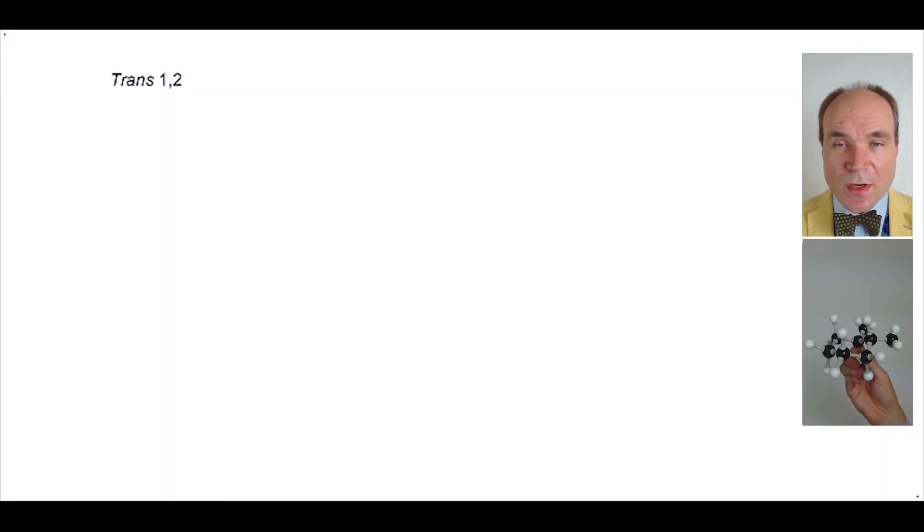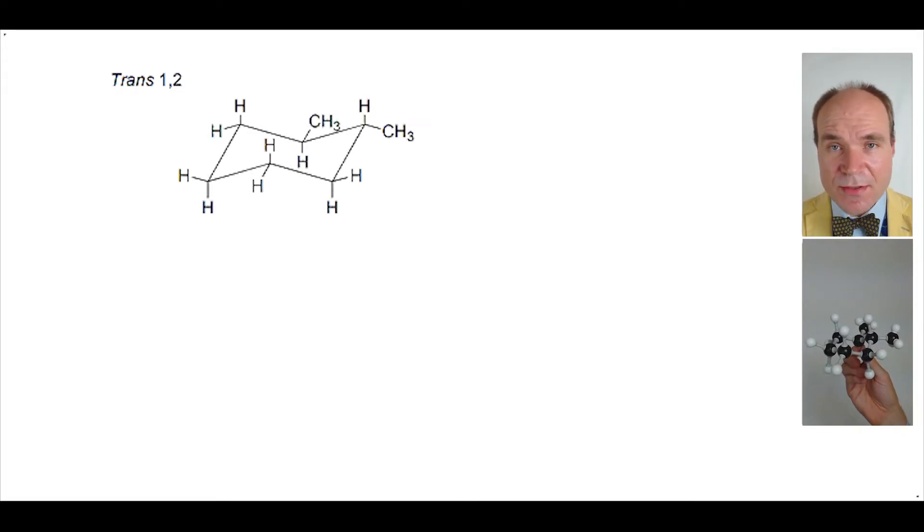Let's look at the trans-1,2-di-substitution pattern. 1,2 tells us that the methyl groups are attached to carbons 1 and 2 of the cyclohexane ring. Trans informs us that the methyl groups are on opposite sides of the ring. That's to say, if we drew a horizontal dotted line through one of the carbons in the ring, one of the methyl groups would be above from this line, the other methyl group would be below from this line.